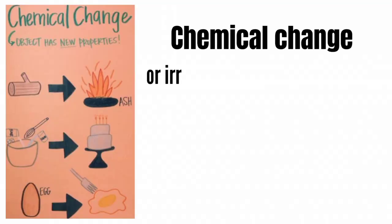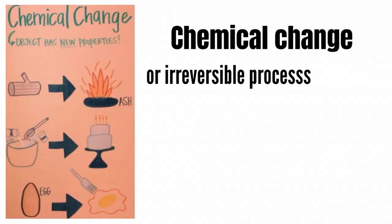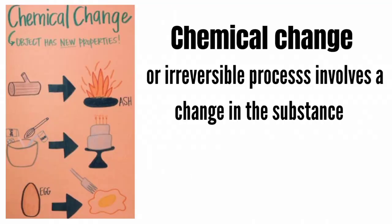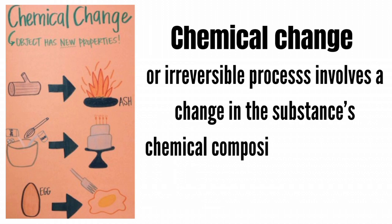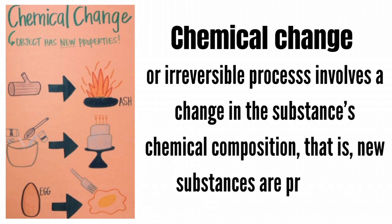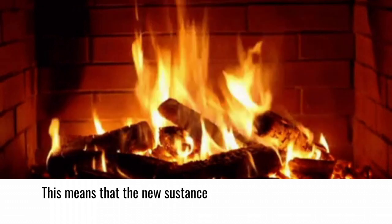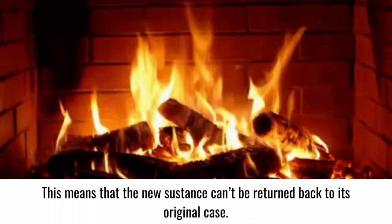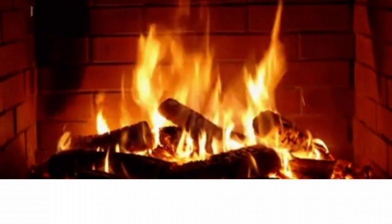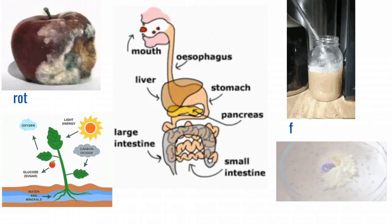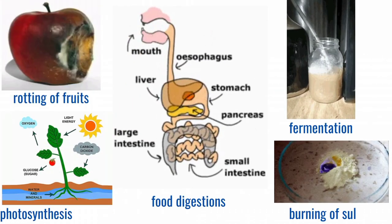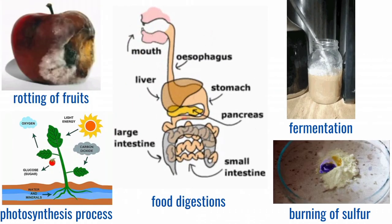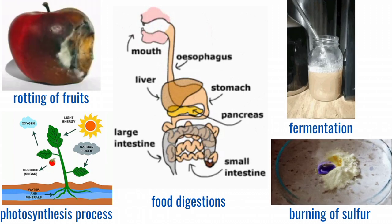Chemical change, or irreversible process, involves a change in the substance's chemical composition — that is, new substances are produced. This means that the new substance cannot be returned back to its original state. Examples include: rotting of fruits, burning of sulfur, photosynthesis, food digestion, and fermentation.